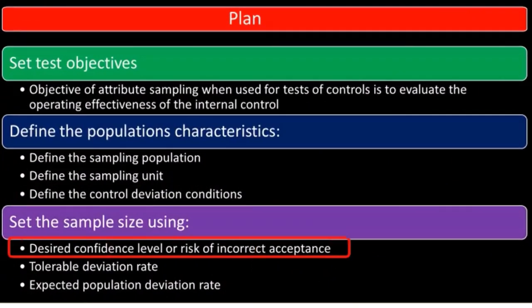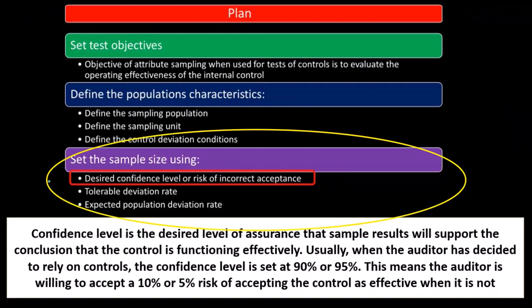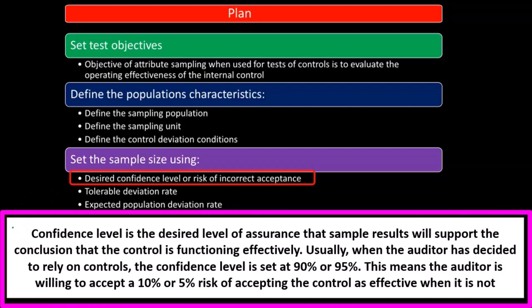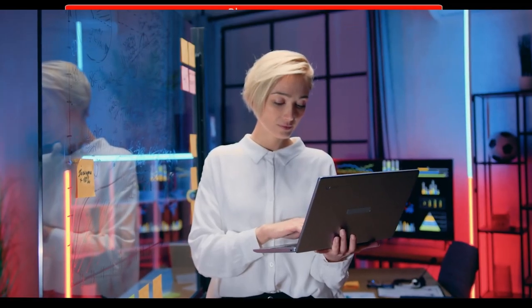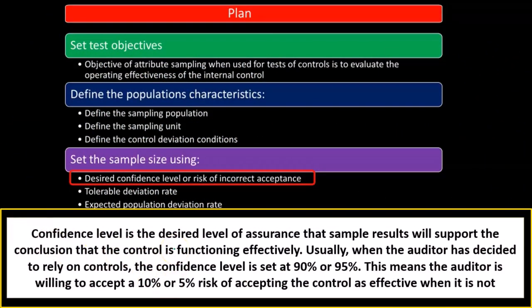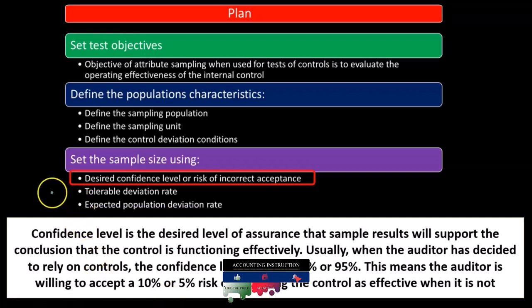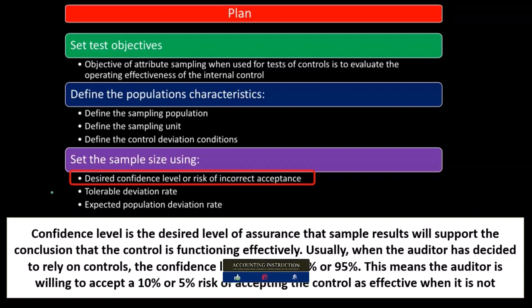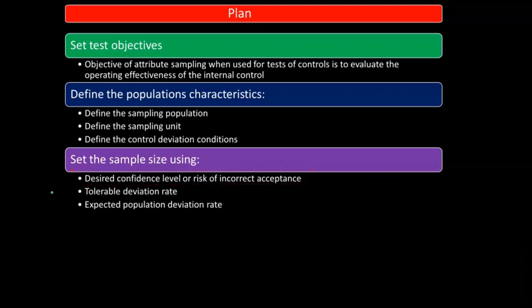When setting the sample size, we consider the desired confidence level or risk of incorrect acceptance. The confidence level is the desired level of assurance that sample results will support the conclusion that the control is functioning effectively. Usually when the auditor has decided to rely on controls, the confidence level is set at 90% or 95%. This means the auditor is willing to accept a 10% or 5% risk of accepting a control as effective when it is not.